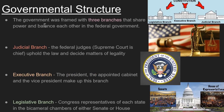The government was framed with three branches that share power and balance each other. The judicial branch — federal judges with the Supreme Court at the top — upholds the law and decides matters of legality. This did not exist in the Articles of Confederation. The executive branch — also new with the Constitution — is the president, vice president, and appointed cabinet members. There was no president until this point. The legislative branch — Congress — is the representatives of each state in the bicameral chambers: the Senate and the House. These three branches of government check and balance each other — that's the intention of checks and balances.